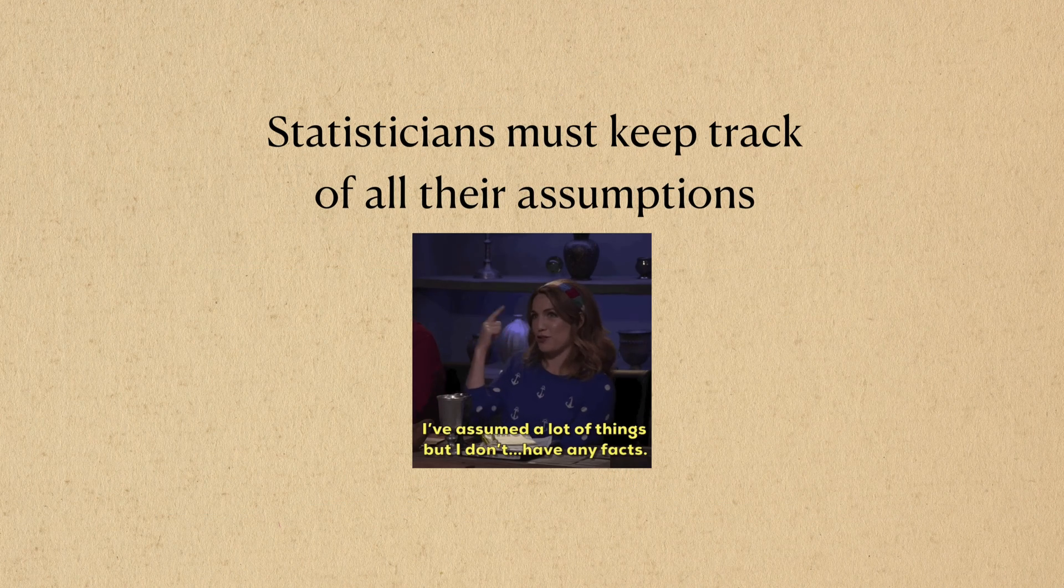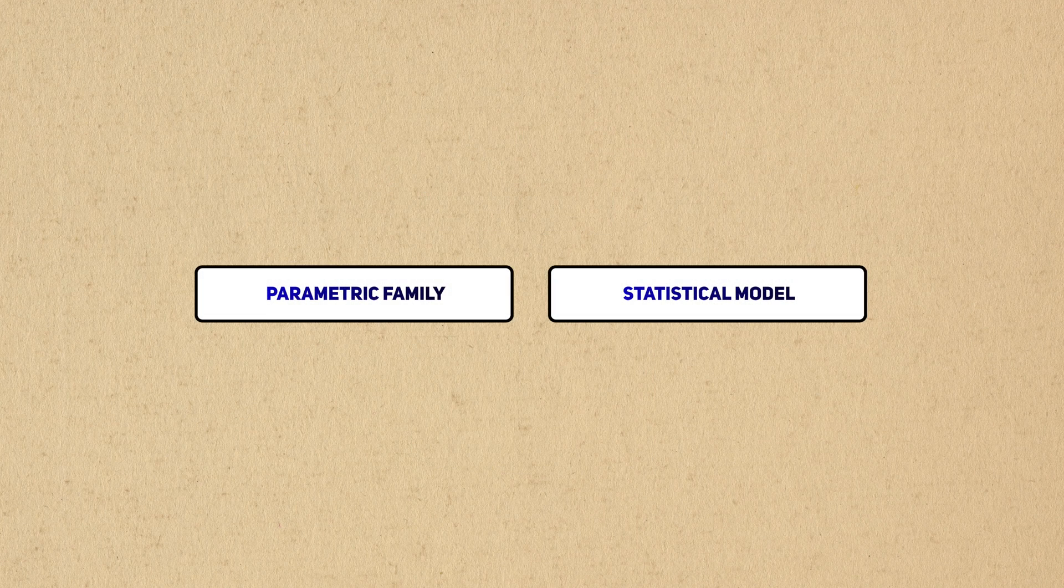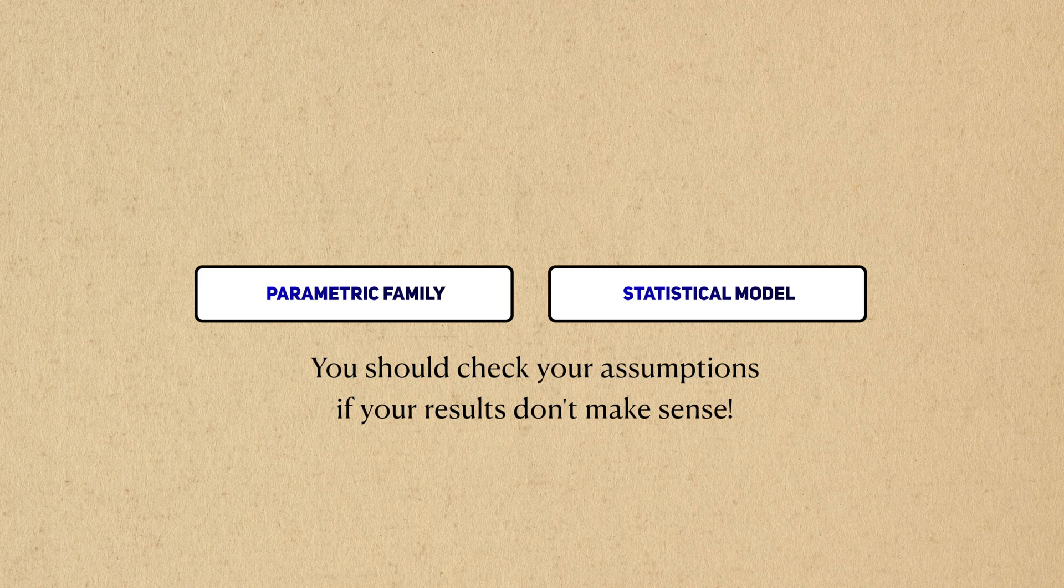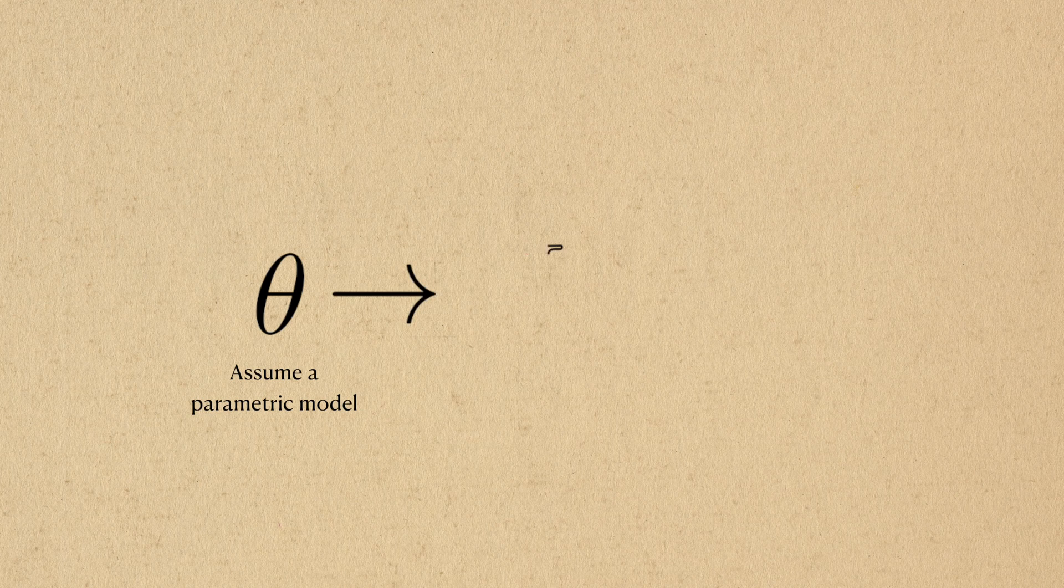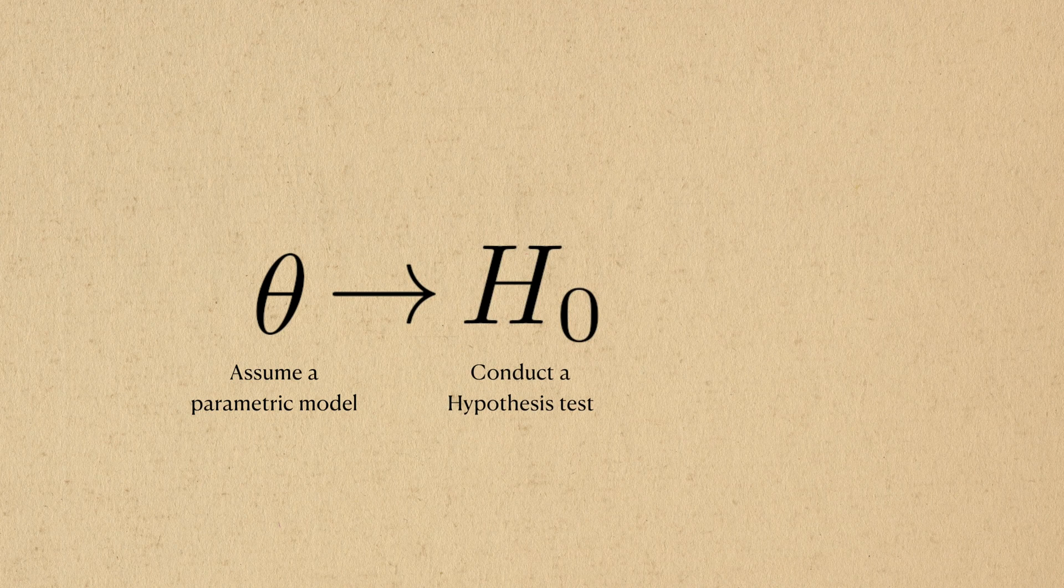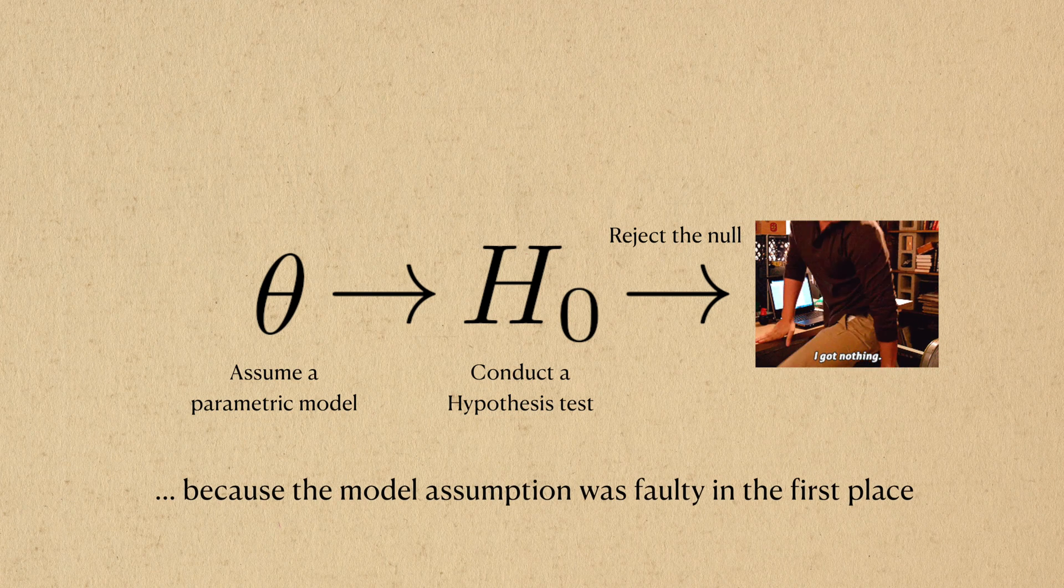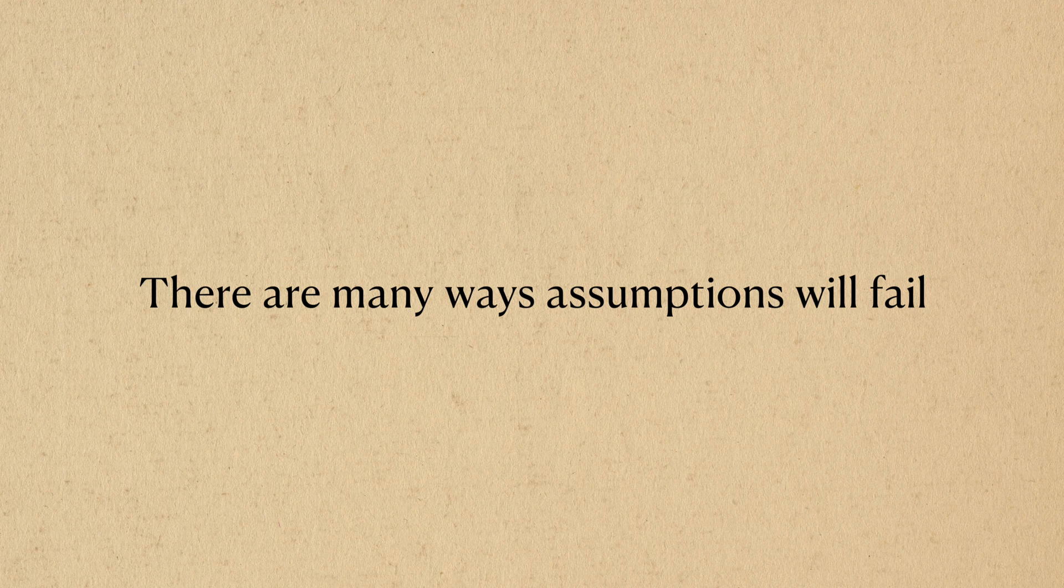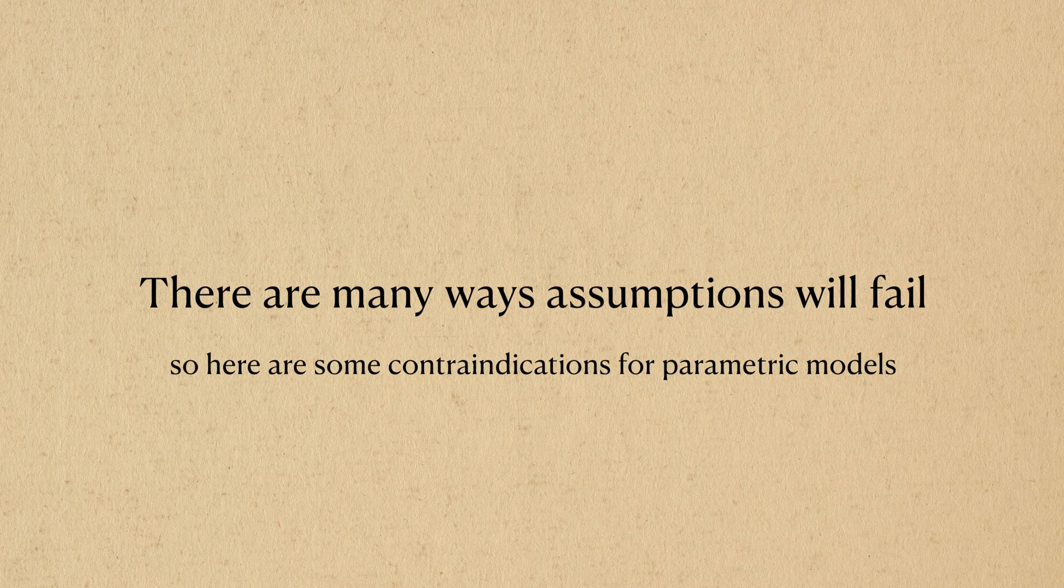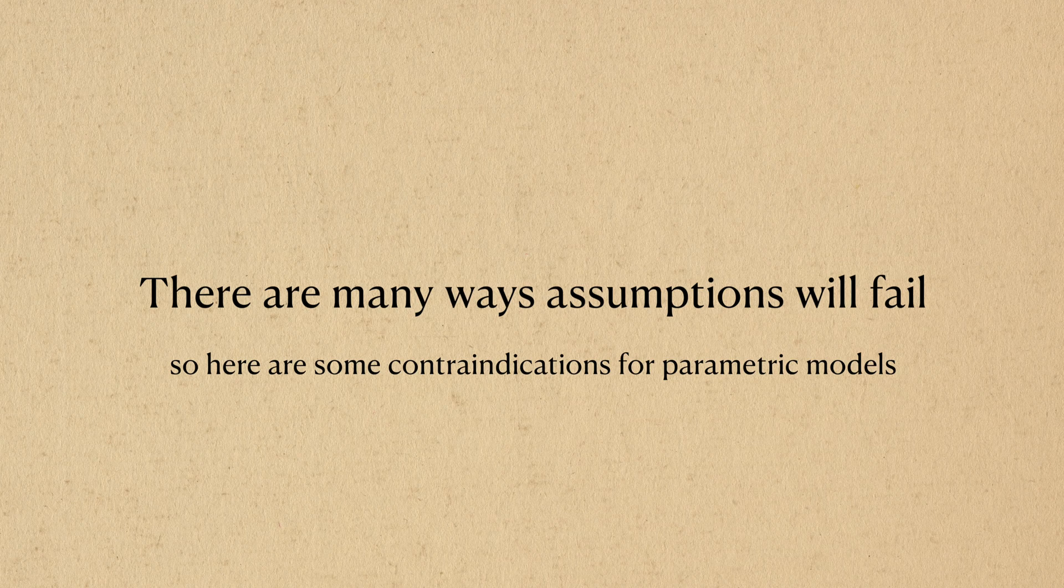One aspect of being a good statistician is to keep track of your assumptions. If you know what your assumptions are, you know what to check if your analyses don't make sense. Using a parametric family is often an assumption. It's totally plausible to go through an entire hypothesis test on a parameter, reject the null hypothesis, and learn absolutely nothing because your model wasn't a good representation of reality. There are many ways that an assumption can be violated, but here's two examples to give you an idea of what might contraindicate a parametric family.